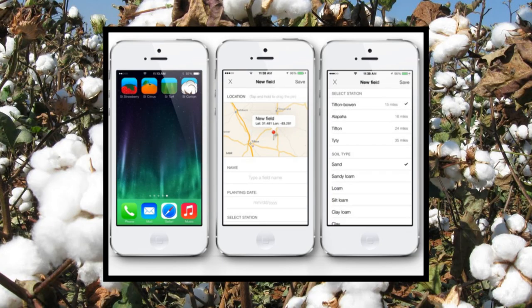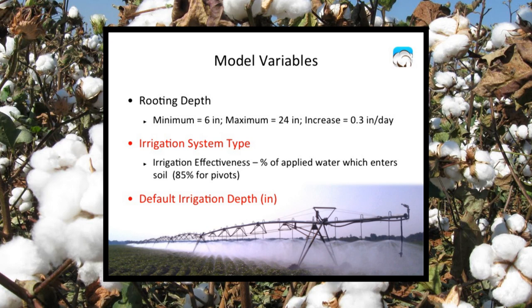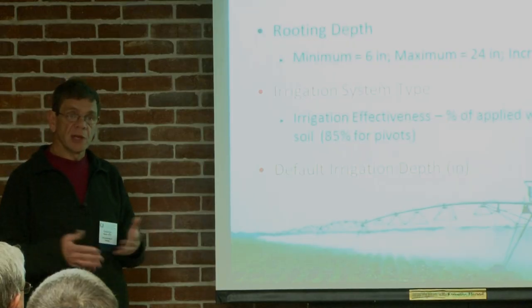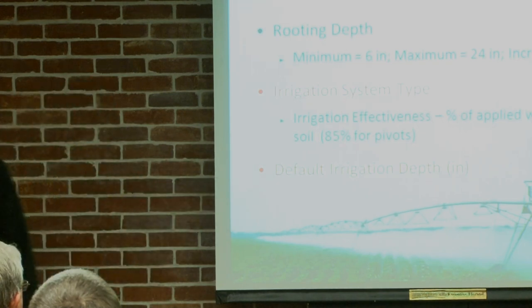When I was testing this the other day, I selected the Tifton Bowen Farm as the closest station because the Tifton station was down and wasn't reporting that particular date. There are other important variables: the rooting depth — we've just changed this to 30 inches — increasing at about 3.3 inches per day based on Dr. Snyder's recommendations. We have two irrigation system types built in — pivots and subsurface drip. It's also important for the user to enter the default irrigation amount for the system: how much you would normally irrigate, an inch, three-quarters of an inch, and so on.